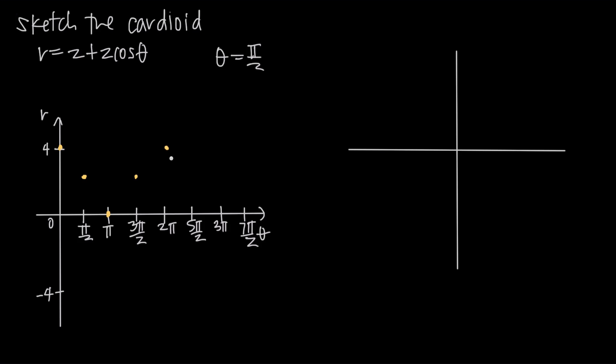And now notice that we're back to where we started. We're back to 4 which was the first point that we plotted. This pattern will continue to repeat itself. We could double check ourselves. We could evaluate at all these values.